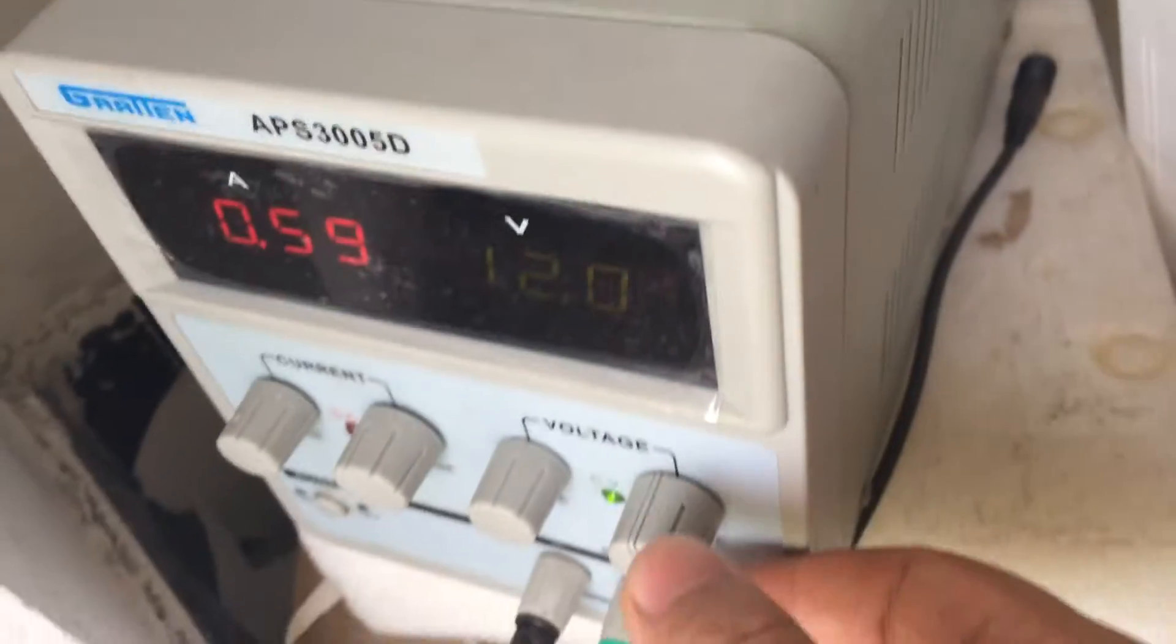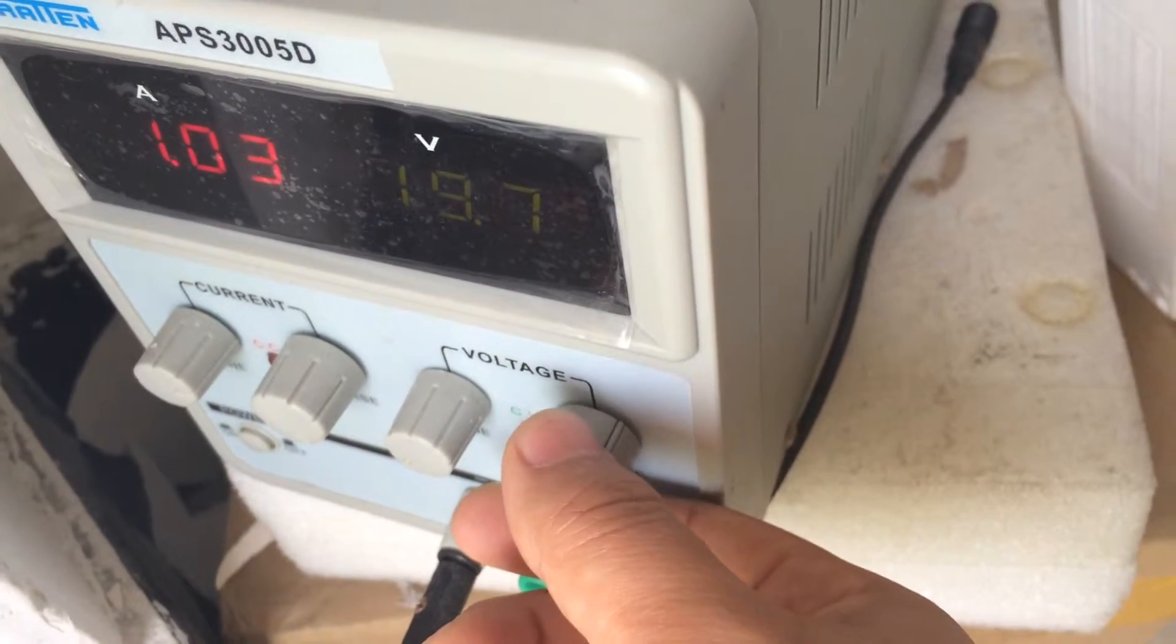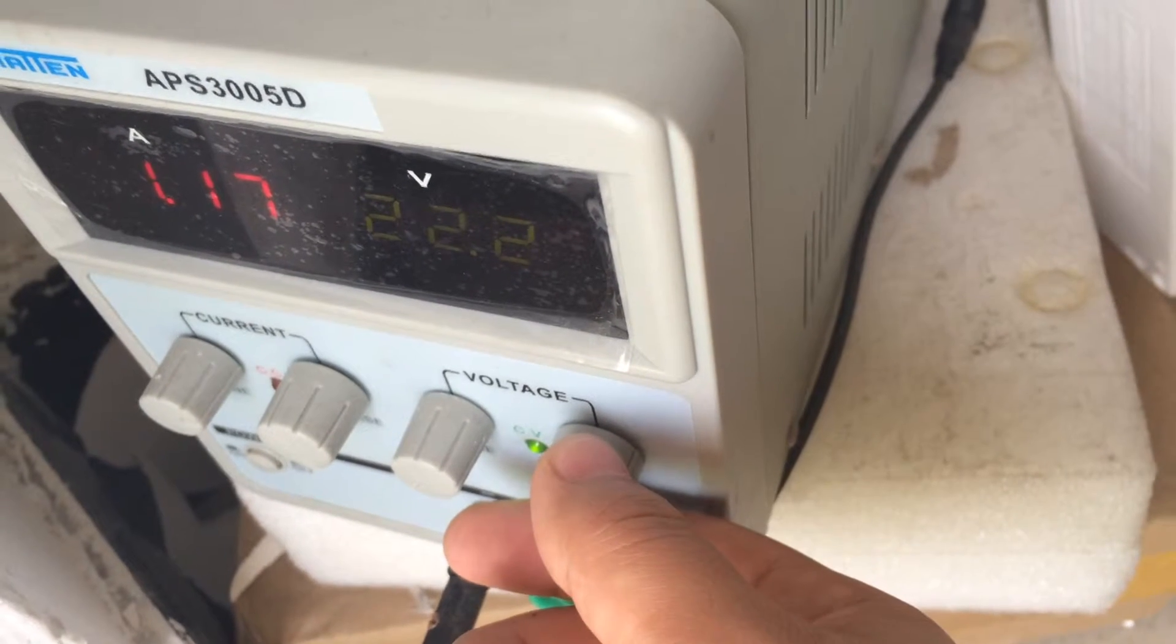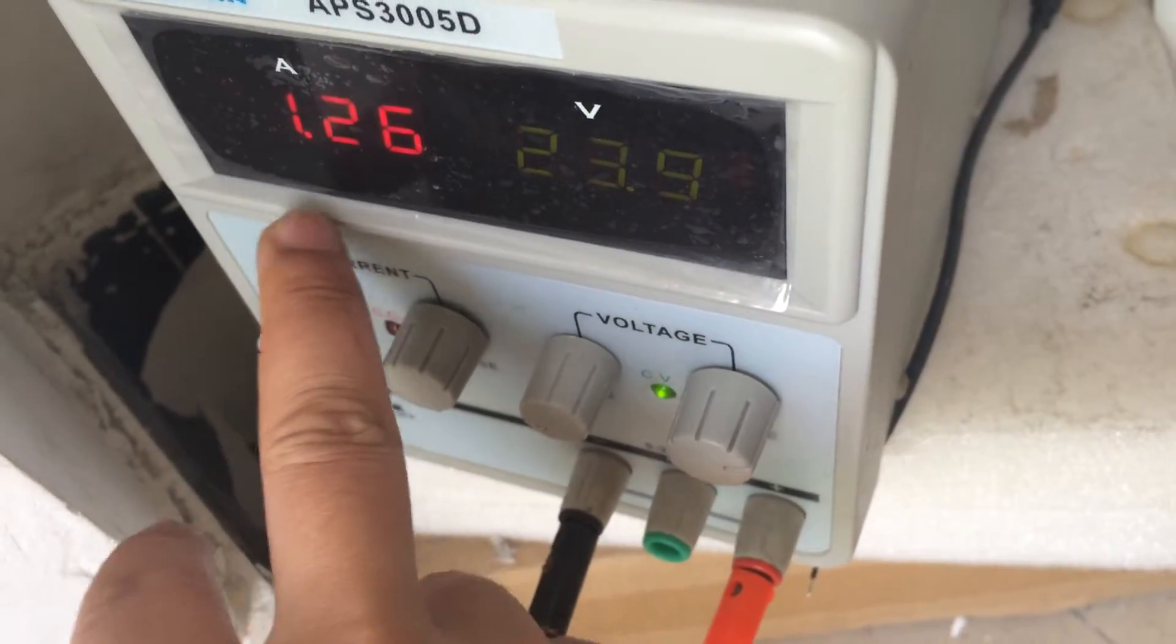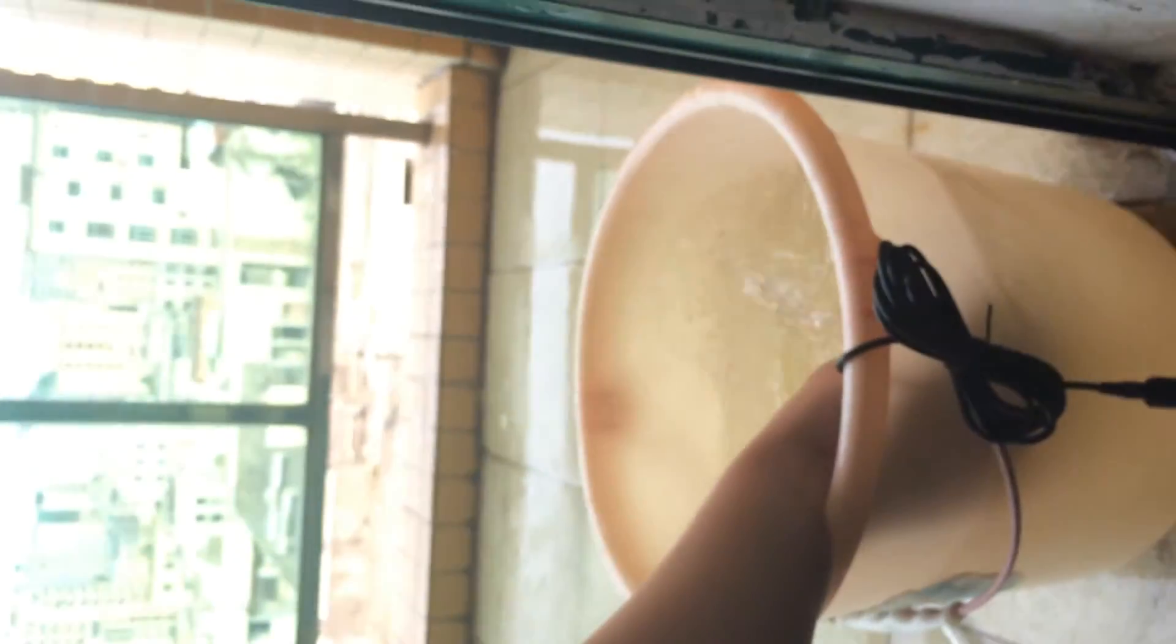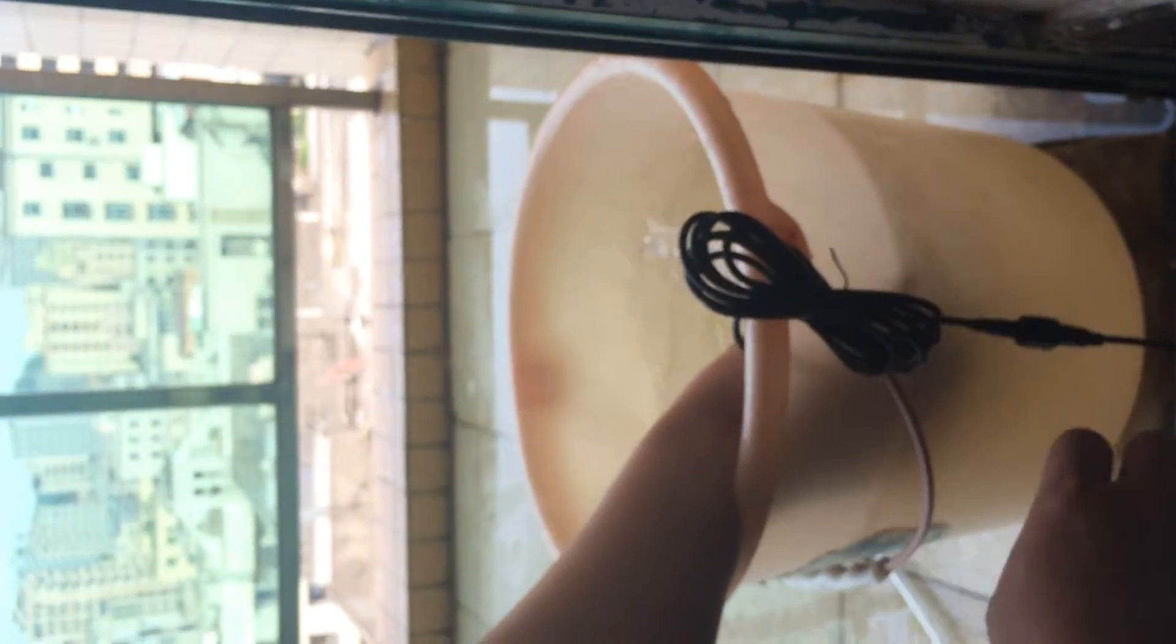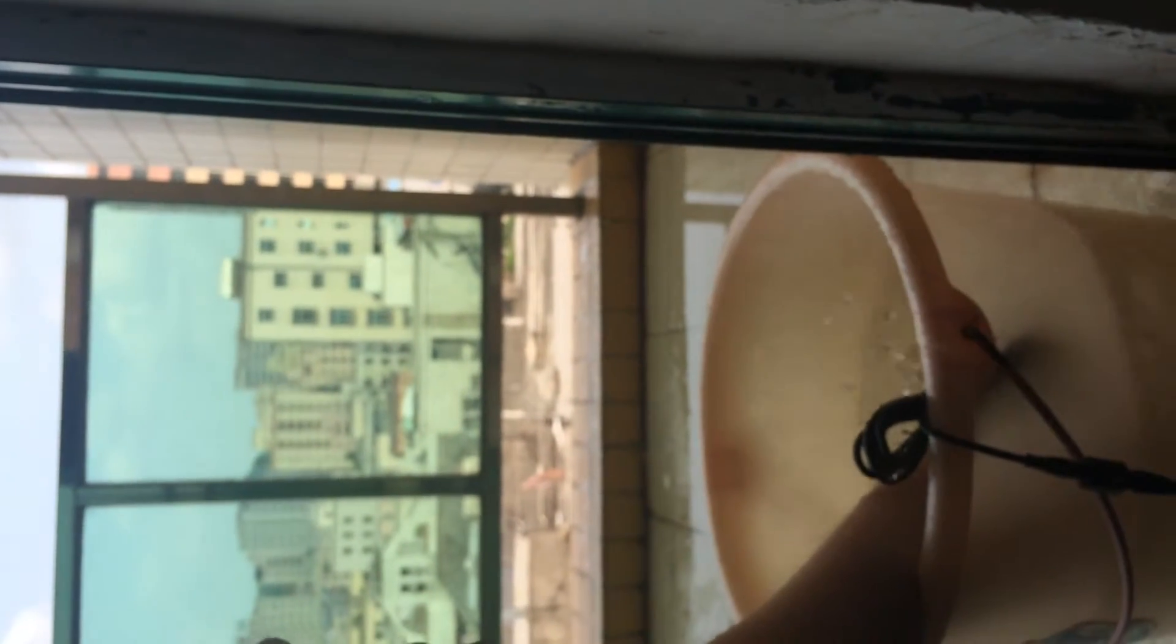As we have just mentioned, this pump can normally work at 24 volts. So we just directly adjust the pump input voltage to 24 volts. Now the current becomes 1.26. It means that the power consumption of this pump is about maybe 28 watts. Now we can see its performance. As you can see, this is the spring effect. Of course, the spring is much lower than the height, the real height, when we connect the pump with some tube.